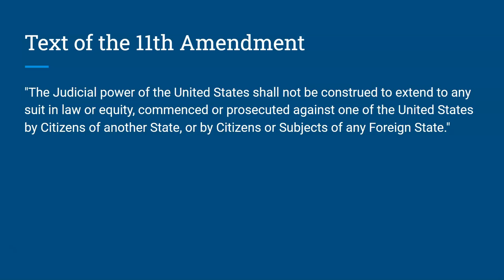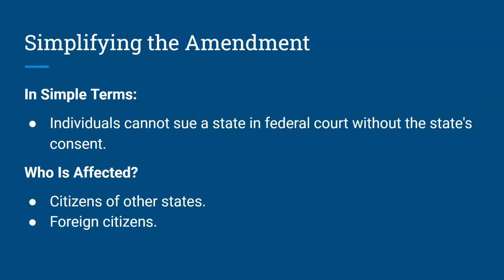There are a lot of words in there and it's not the clearest, so let's break that down. In simple terms, it means a person cannot sue the state of Michigan, Ohio, or Indiana, for example, in federal court without that state's consent. This affects citizens of other states and also foreign citizens. Keep in mind the idea of federalism — we're talking about suing a state in a federal court system.